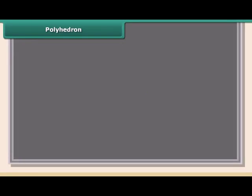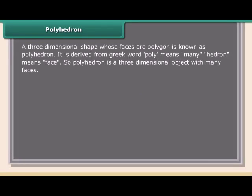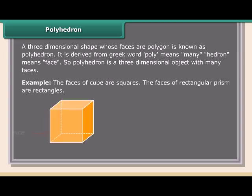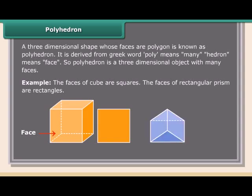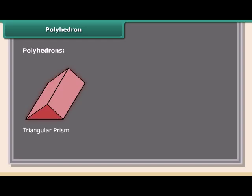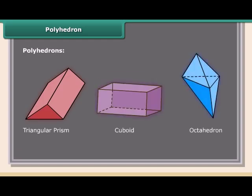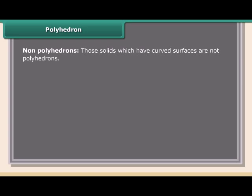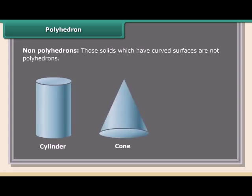A polyhedron is a three-dimensional shape whose faces are polygons. It is derived from the Greek words: 'poly' meaning many and 'hedron' meaning face. For example, the faces of a cube are squares and the faces of a rectangular prism are rectangles. Polyhedrons include triangular prism, cuboid, and octahedron. Solids with curved surfaces, such as cylinder, cone, and sphere, are non-polyhedrons.